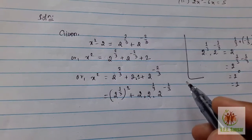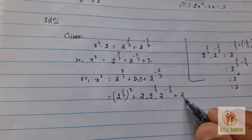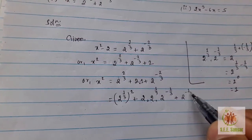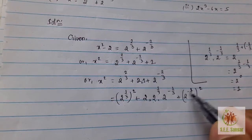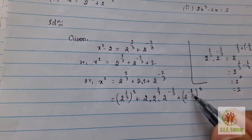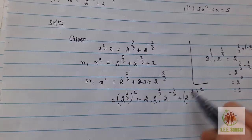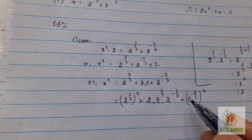You can arrange this as 2^(1/3) and 2^(-1/3). Look at here, power multiplies, so 2 × 1/3 = 2/3, and 2 × (-1/3) = -2/3. Isn't it the same? The form is the same, the way of expression is different.